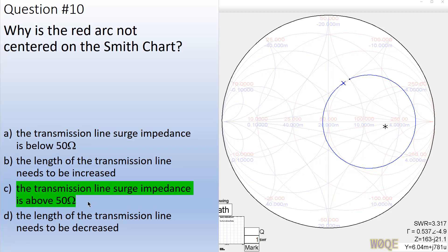Here the answer is that the transmission line surge impedance is above 50 ohms. We have the classic circular rotation you get for a piece of transmission line, and it appears to be coming back very closely to the point where it started, so it's low loss. It's a length a little bit less than half a wavelength, centered out here — this transmission line is 150 ohms, and this is typical of what you would expect to see.